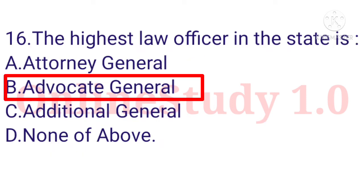Question number 16: The highest law officer in a state is the Advocate General. The highest law officer in India is the Attorney General, and the highest law officer in a state is the Advocate General.